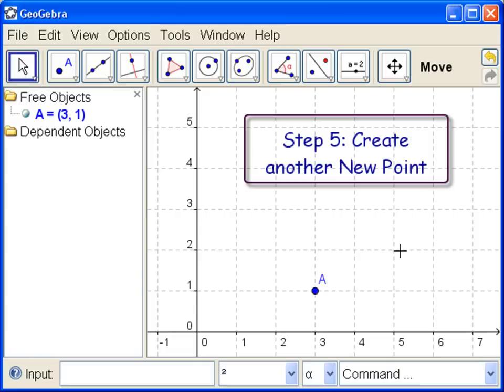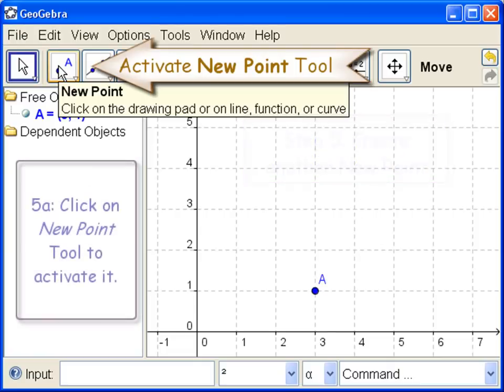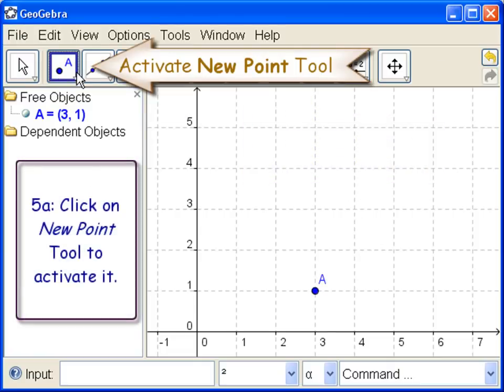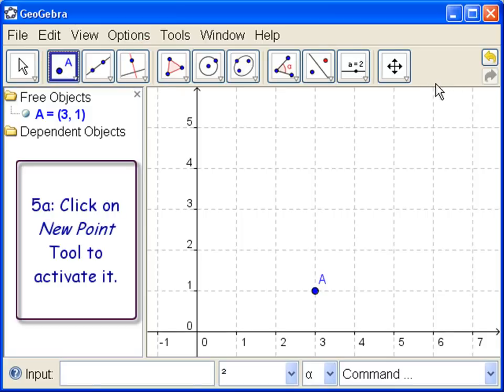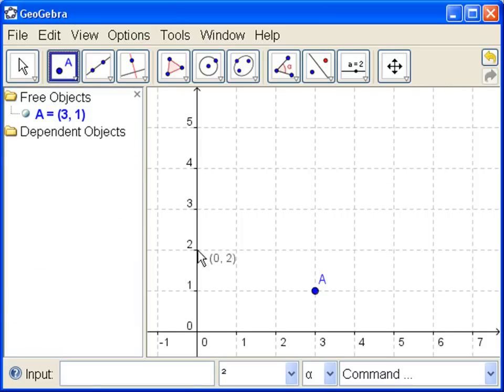Now let's make another new point. To make another new point we have to go back to the new point tool. Click to activate it and your window will say point over here. Because I'm working in such a small window there's not enough space so it doesn't want to write that.